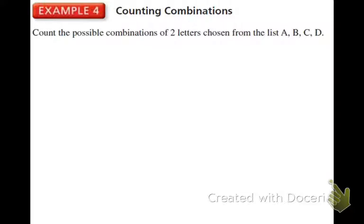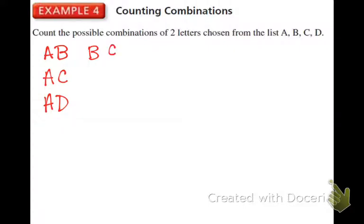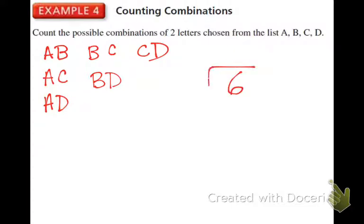Two letters from the list — we're going to start with A. A can be grouped with B, A with C, A with D. Then move to B. B and A is already grouped, so skip. B and C — not yet. B and D — not yet. Move to C: C and A is already there, C and B is already there, C and D is new. Then D: D and A, D and B, D and C are all already listed. How many total? Six. Six ways. So your answer would be a number.